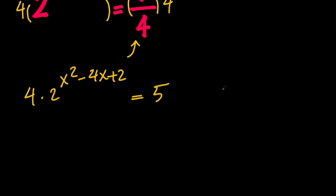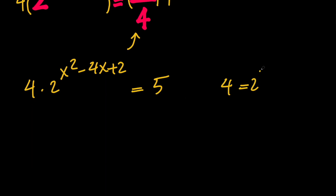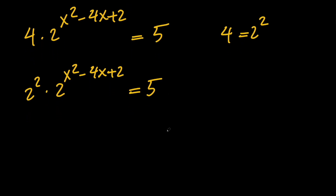Now, notice that 4 equals 2 squared. So we have 2 squared times 2 to the power of x squared minus 4x plus 2 equals 5. Whenever we have a product of exponents with the same base, we need to go ahead and add up the powers. So on the left-hand side, we're going to have 2 to the power of x squared minus 4x plus 4, and this expression equals 5.